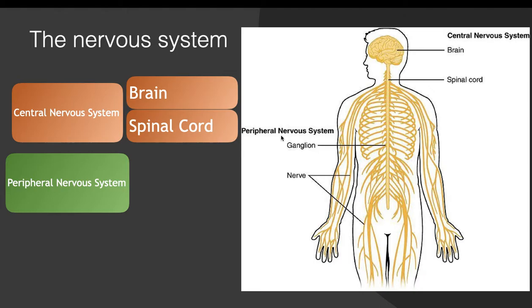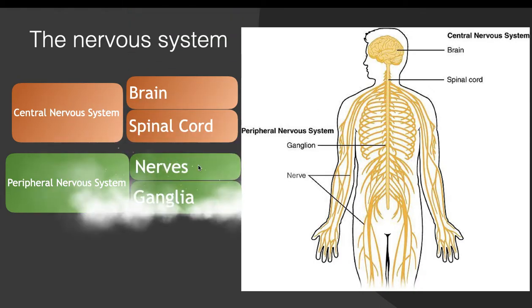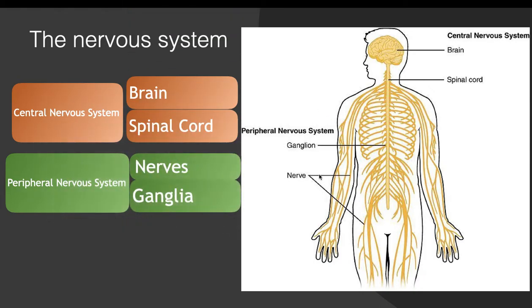The next part is the peripheral nervous system, and the peripheral nervous system is made up of the nerves and the ganglia. We'll talk more about the ganglia.